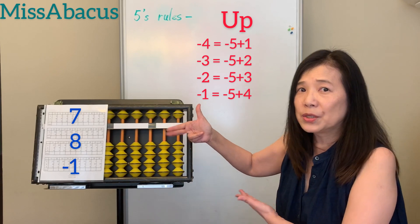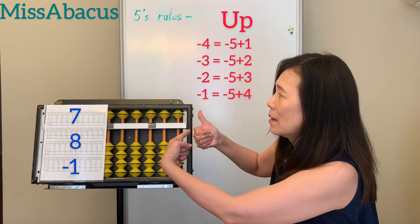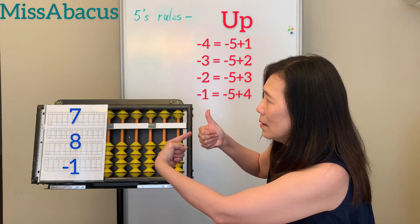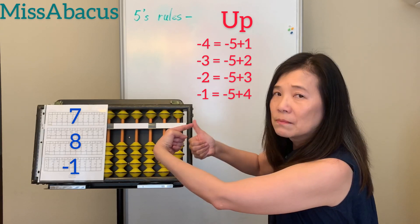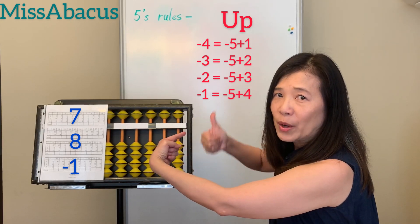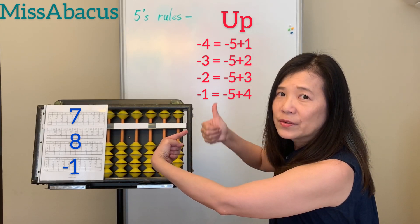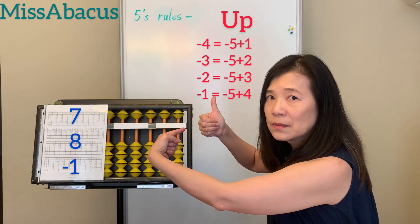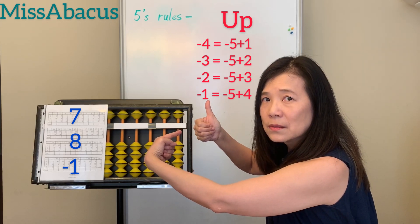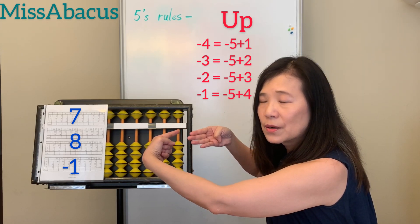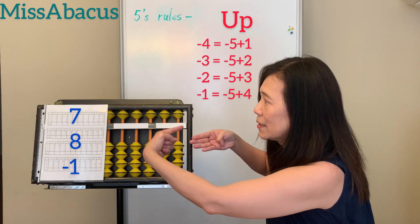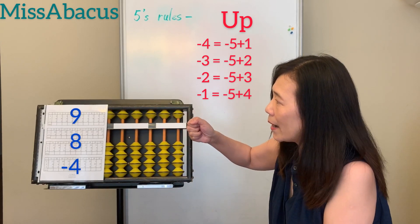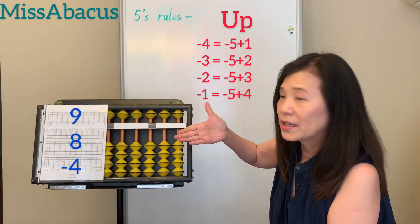Let's do number 8: 7, 5, 6, 7 plus 8. Of course 10's rule: minus 2, plus 10. Then minus 1: you have 5, so for the 1, minus 5, plus 4. Answer: 14.